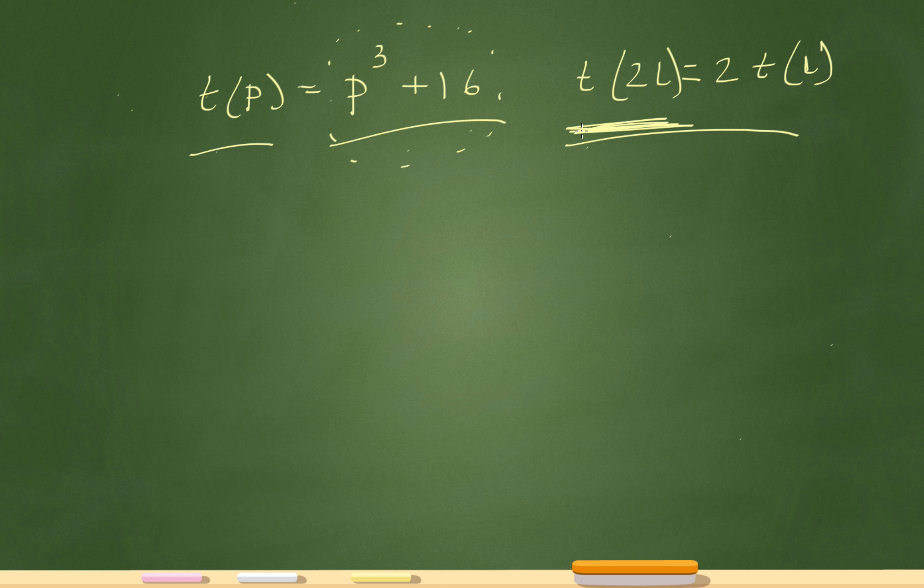Let's start on the left side of this equal sign. t of 2l is saying, go to your function of t, and what's your function of t right here? This is the main function of t right there, p cubed plus 16.